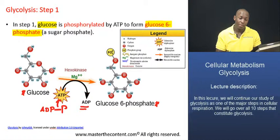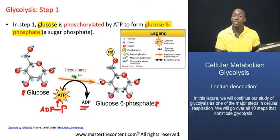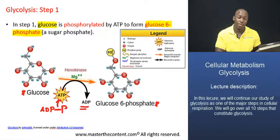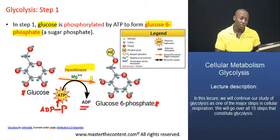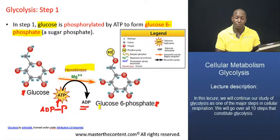The enzyme responsible for catalyzing this reaction is referred to as hexokinase. It is an enzyme responsible for transferring the phosphate group from ATP to the sugar, resulting in the formation of glucose-6-phosphate and ADP.